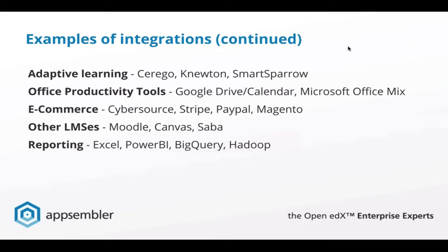There are also different reporting capabilities. The simplest is using something like Microsoft Excel — pull the raw data in and do analysis there. We also have customers using Power BI, which is a Microsoft tool. MIT uses BigQuery for reporting, and another customer uses Purdue to do a lot of their reporting on student progress.